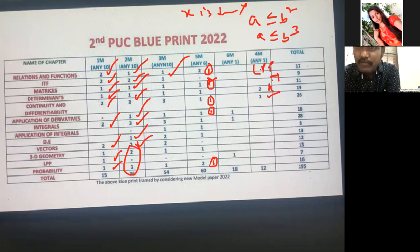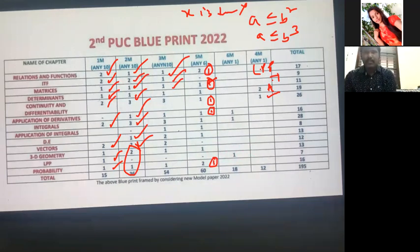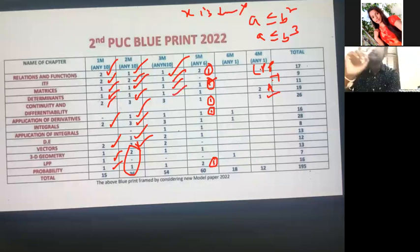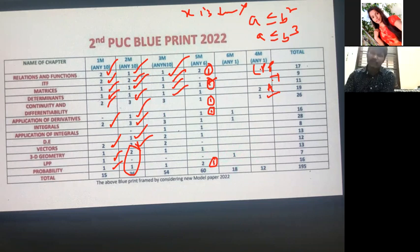For Matrices three-mark questions: (AB)' = B'A' or sum of symmetric and skew-symmetric — standard questions you know well. For Determinants three-mark questions: theorem AB whole inverse = B⁻¹A⁻¹ or some other question — they added a new 3-mark question for Determinants and we cannot predict exactly which question they will give.